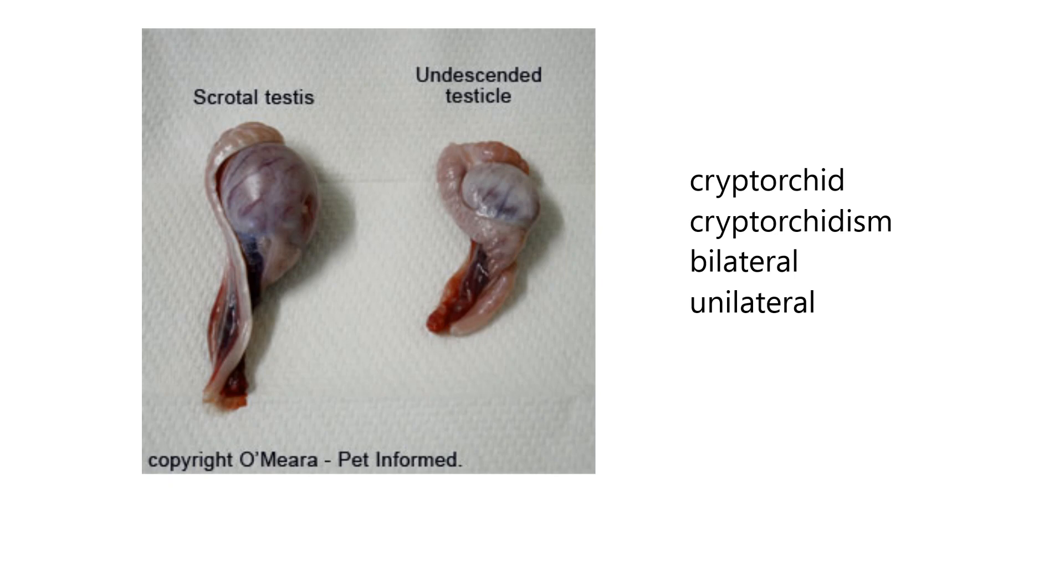When an animal has at least one testicle in the body cavity, that's where they were formed in the fetus, but they're supposed to descend into the scrotum around the time of birth, then you would call that animal a cryptorchid. This would be in the male. If an animal is a cryptorchid, you could say it has cryptorchidism. If both testes are retained in the body, you could call the animal bilaterally cryptorchid. The picture on the left shows a unilateral cryptorchid animal.